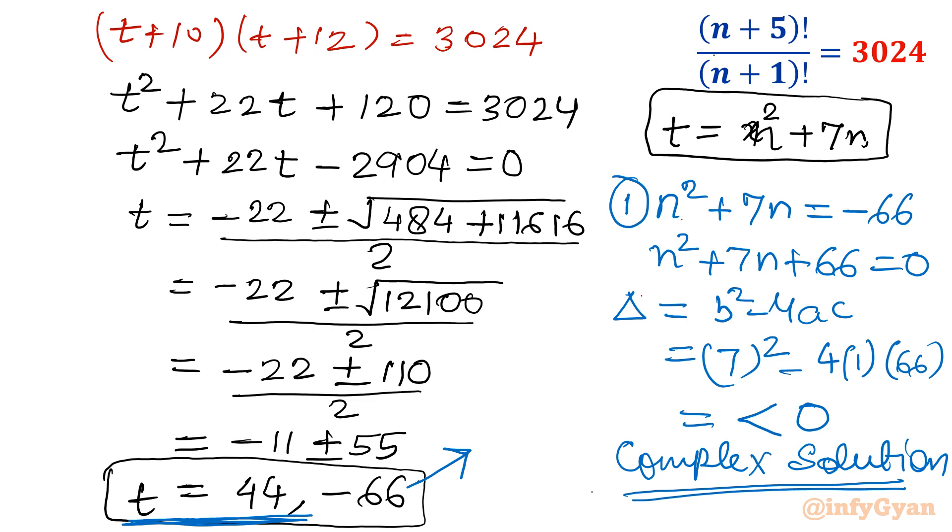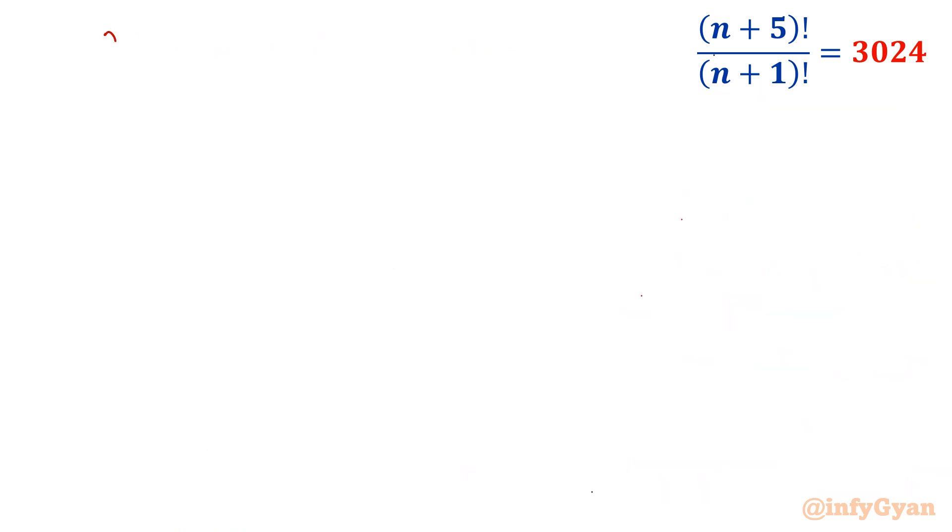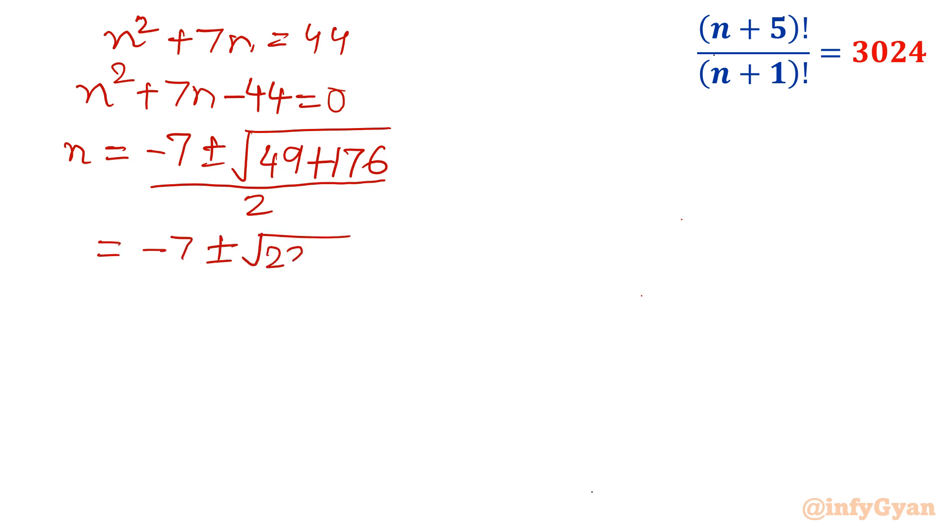Now we have a second option, the second value of t: t = 44. So now we will put n² + 7n = 44. So n² + 7n - 44 = 0. Let us write the quadratic formula directly. Minus b, so minus 7 plus minus square root b². So 49 minus 4ac. That value will be 4 times 1 times minus 44. So that will be plus 4 times 44, which is 176, over 2a, so 2. Minus 7 plus minus, if you add both you get 225 over 2. Minus 7 plus minus 15. The square root of 225 is 15 over 2. So let me take the plus sign. 15 minus 7 is 8 over 2. And minus sign, then minus 22 over 2.